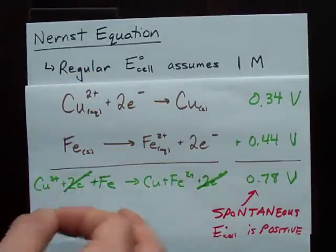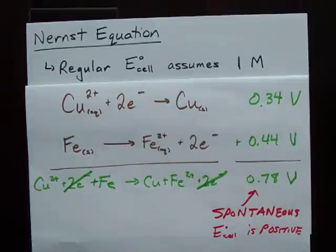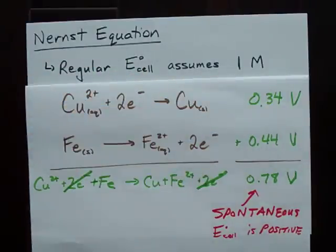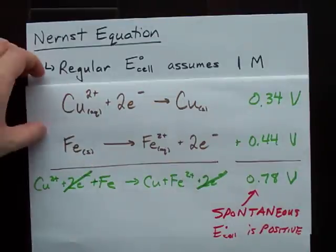Oh, and by the way, temperature plays a role as well. Well, if you don't have one mole per liter solutions, you're going to have to use the Nernst equation to figure out your actual cell potential. It'll be close to 0.78, but it won't be exactly 0.78.